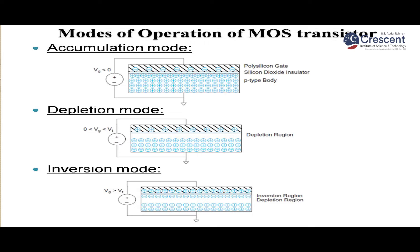In inversion mode, the gate voltage is greater than the threshold voltage. As the gate voltage becomes more positive, the depletion layer is occupied by negative ions — the minority carriers in the P-substrate attracted toward the positive gate. This layer, previously filled with positive carriers, is now occupied by negative ions, forming an N-channel MOSFET.